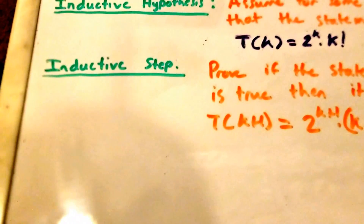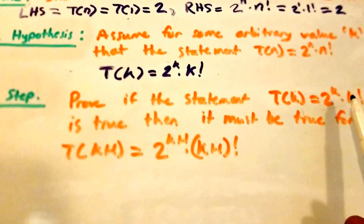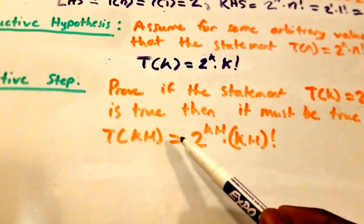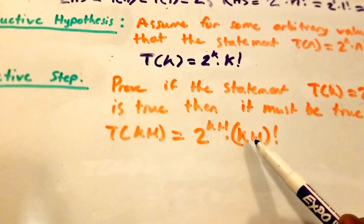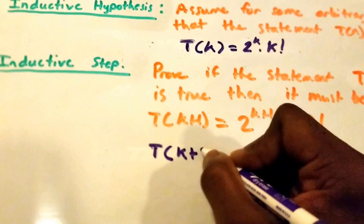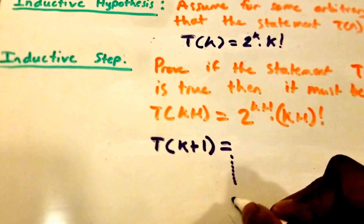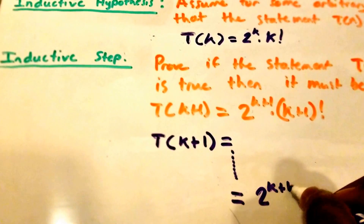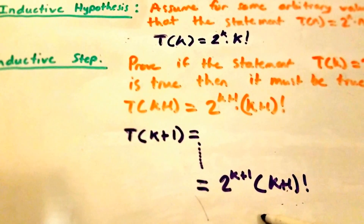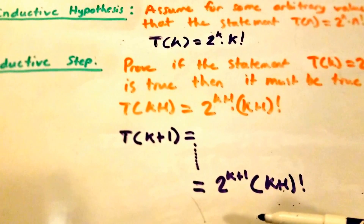For our inductive step, we prove that if T of k equals 2 to the power of k times k factorial is true, then it must be true for the next natural number — that is, T of k plus 1 equals 2 to the power of k plus 1 times k plus 1 factorial. We will use algebra to prove this, using the recurrence relation T of n equals 2 times n times T of n minus 1.